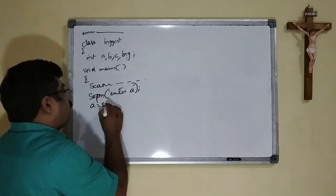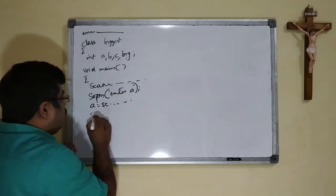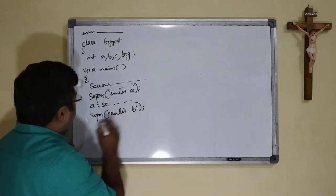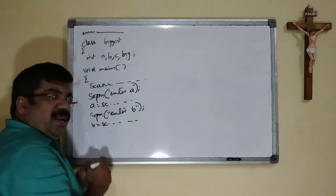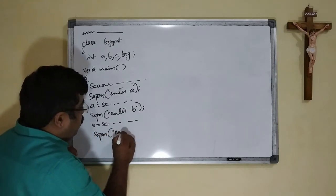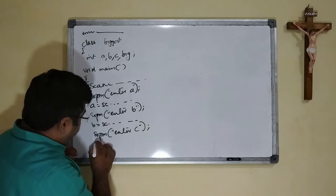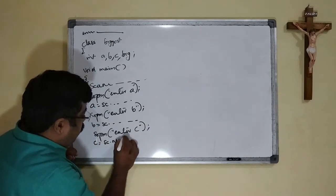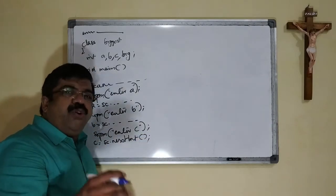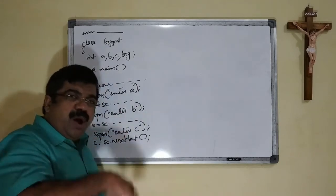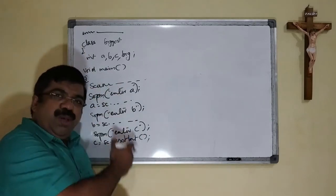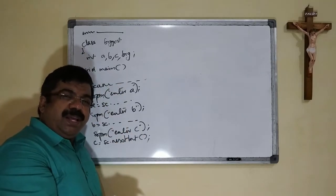Again give the message, System.out.println enter B. B is equal to SOC dot next int. Next one, System.out.println enter C. We will give C is equal to SOC dot next int. This is only to avoid your doubts, because there may be doubts why can't we write three different statements. So in order to answer that, I have written three different statements.